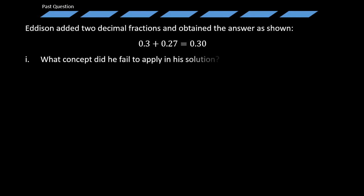Question I: What concept did he fail to apply in his solution? Question II: Explain how he should have added 0.3 plus 0.27 correctly. Now let's look at the solution to this problem.